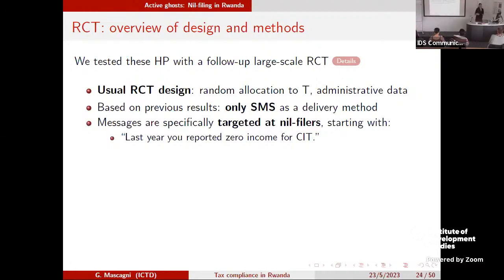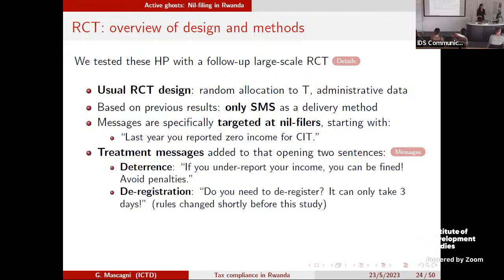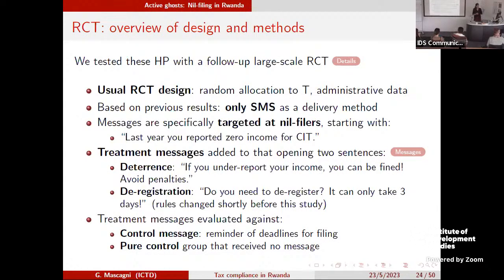The design is the same — random allocation to treatment groups — but this time we only used SMS, since that was the most effective delivery method from the previous experiment. We targeted messages specifically at nil filers, telling them: 'Last year you reported zero income in your corporate income tax declaration.' We then added treatment messages — one related to deterrence ('If you under-report your income you can be fined'), and one related to deregistration ('Do you need to deregister? It can take only three days'). This simplified deregistration process had just been introduced a few months prior and hadn't yet been communicated to taxpayers.